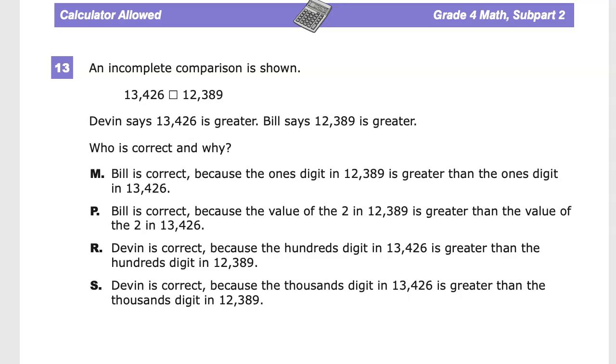An incomplete comparison is shown. 13,426, and then there is a little box there, which I imagine would either include some sort of inequality, so greater than or less than, depending on how you wanted to look at it, or it could be this.